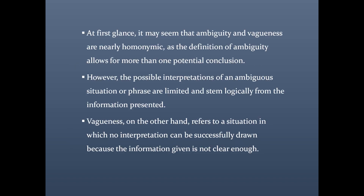At first glance, it may seem that ambiguity and vagueness are nearly synonymous, as the definition of ambiguity allows for more than one potential conclusion. However, the possible interpretations of an ambiguous situation or phrase are limited and stem logically from the information presented. Vagueness, on the other hand, refers to a situation in which no interpretation can be successfully drawn because the information given is not clear enough.